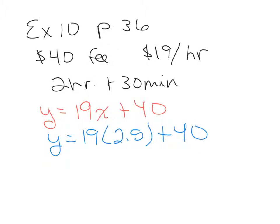When you simplify this all out, 19 times 2.5 is 47.5, plus 40 would be 87.5. Answer this in a complete sentence. How much, the question was how much was charged to Allen and Doris' account?